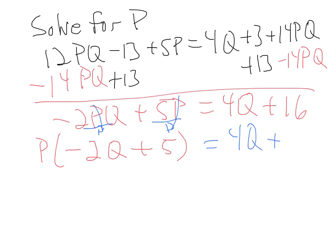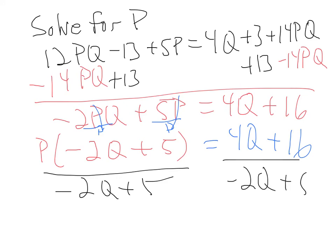So, 4q plus 16. So, now I'm going to divide both sides by negative 2q plus 5. And I can't factor anything else out. I can't do anything more with that expression. Okay, so I hope that helps you. Remember to get the variables that you want on one side. And then if you see a bunch of combinations, you can't get a single term with a p in it, try doing this factoring trick. Hope that helps.